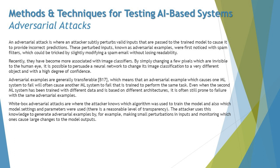An adversarial attack is where an attacker subtly perturbs valid inputs that are passed to the trained model to cause it to provide incorrect predictions. This is very common in security contexts — people look to pass weird but technically valid inputs to the system to make it produce incorrect predictions, causing strange responses from AI-based systems.